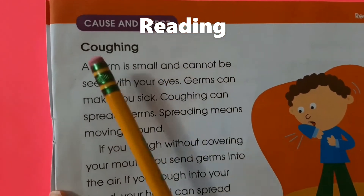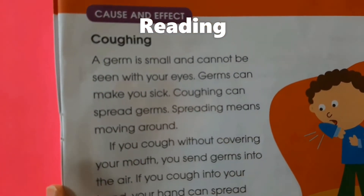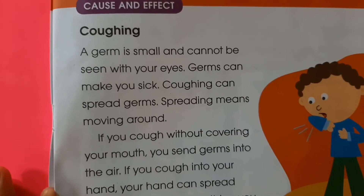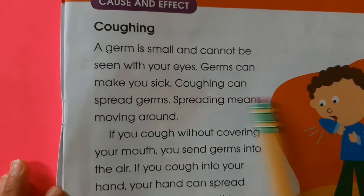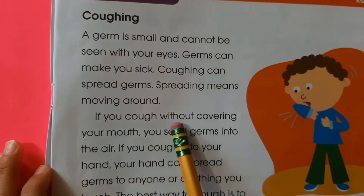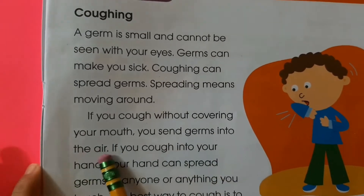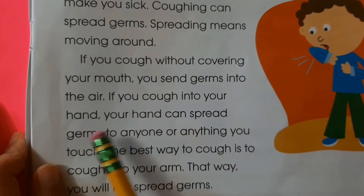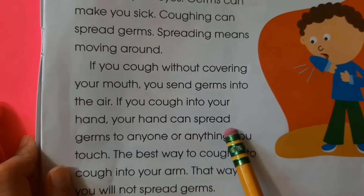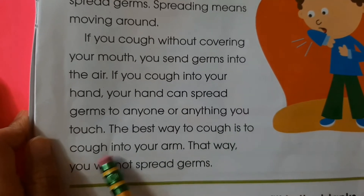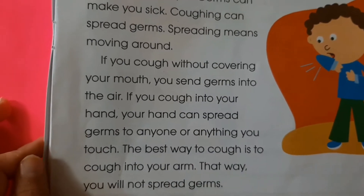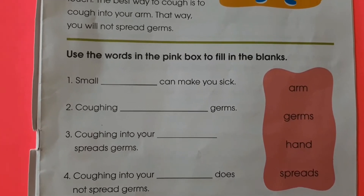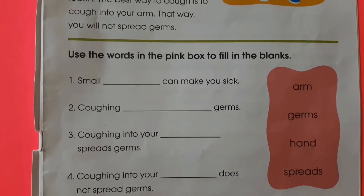Cause and effects. Coughing. A germ is small and cannot be seen with your eyes. Germs can make you sick. Coughing can spread germs. Spreading means moving around. If you cough without covering your mouth, you send germs into the air. If you cough into your hand, your hand can spread germs to anyone or anything you touch. The best way to cough is to cough in your arm. That way you will not spread germs. Use the words in the pink box to fill in the blanks.